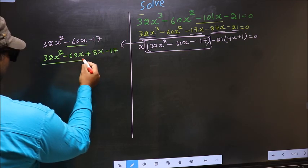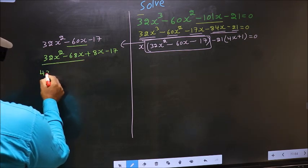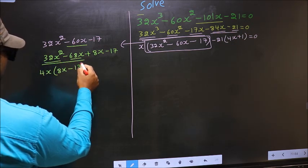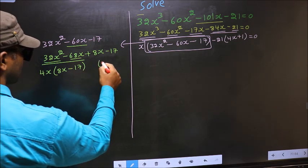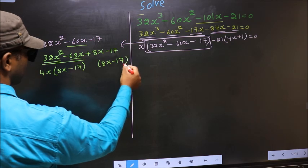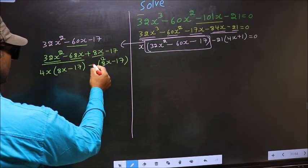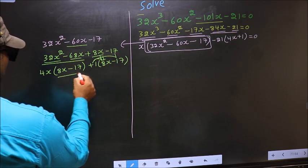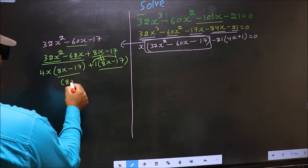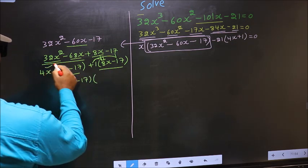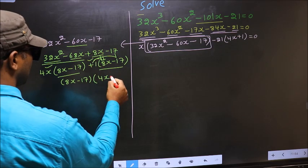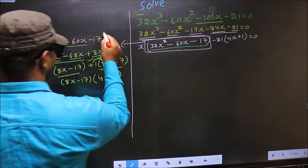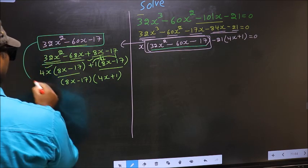What can be taken out common from the first two terms is 4x. So you get 4x times (8x minus 17). Whatever we got here, here also we should get the same thing — plus 1. Now take out (8x minus 17) as common, giving (8x minus 17)(4x plus 1).